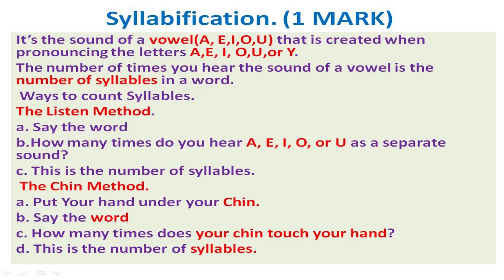First of all, we are going to understand what is syllabification. It is the sound of a vowel — A, E, I, O, U — that is created when pronouncing letters. Sometimes Y is also included. The number of times you hear the sound of a vowel is the number of syllables in a word.